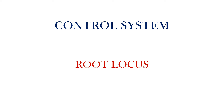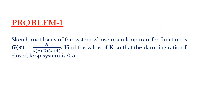A pleasant greetings to all. In this video, I am going to explain a problem in root locus. Sketch the root locus of the system whose open loop transfer function is G(s) = K divided by s(s+2)(s+4). Find the value of K so that the damping ratio of the closed loop system is 0.5.